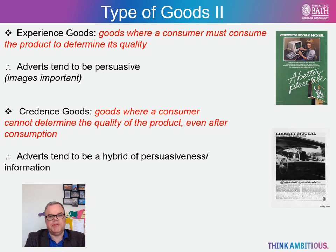We then have experience goods. These are goods which the consumer must first consume to really determine the product's quality. Examples here include processed foods or software programs such as the apps on your smartphone. As such, the adverts tend to be more persuasive, relying upon images and celebrity endorsements to attract custom. For instance, the advert on the slide for the Holiday Inn from 1984 emphasises its new state-of-the-art reservation system, seeking to persuade customers that it has entered the high-tech booking system age.